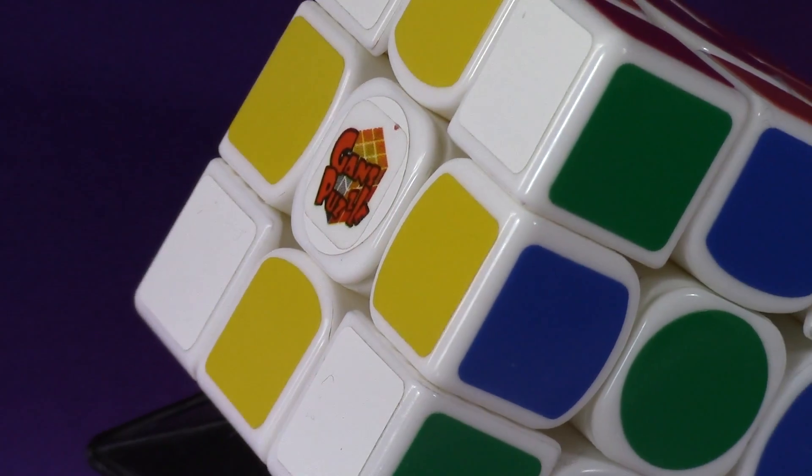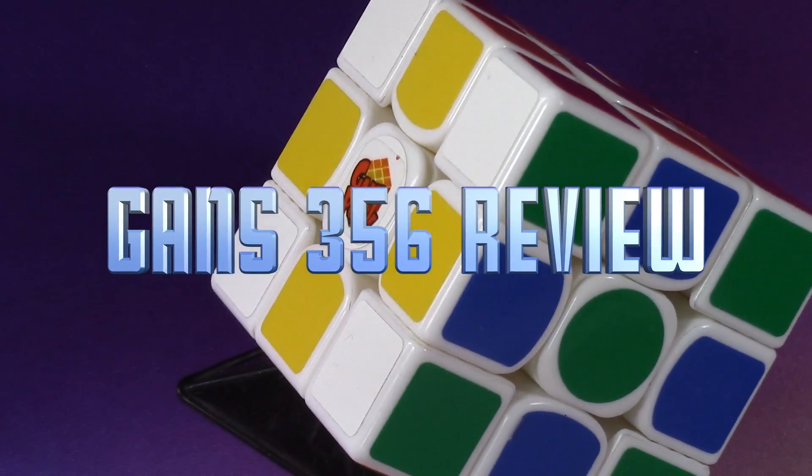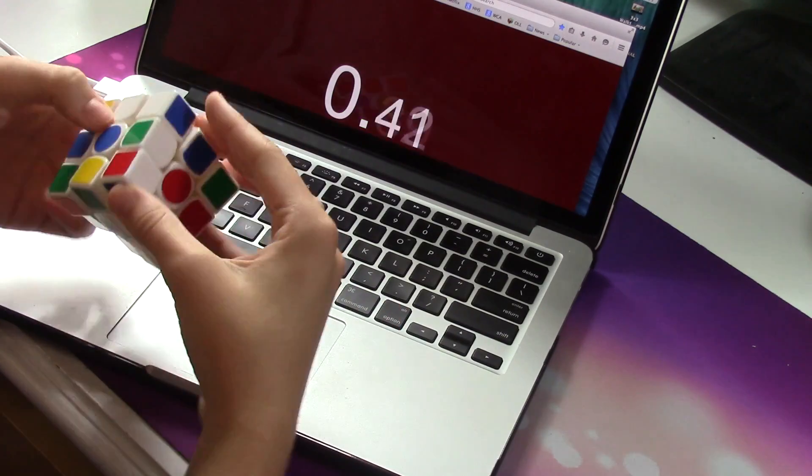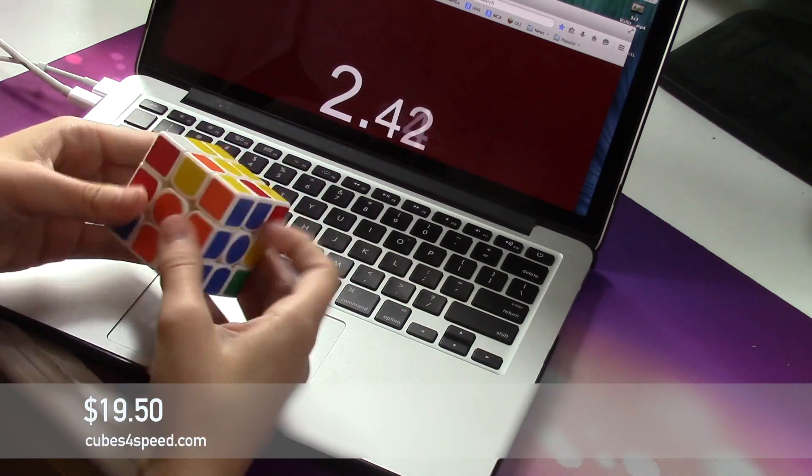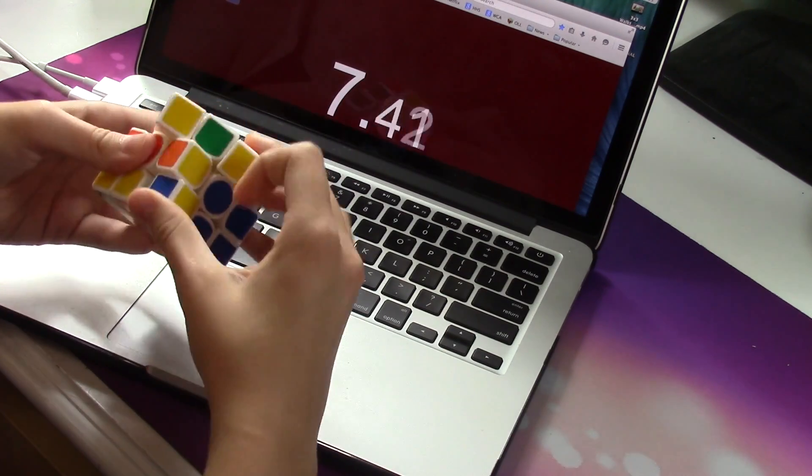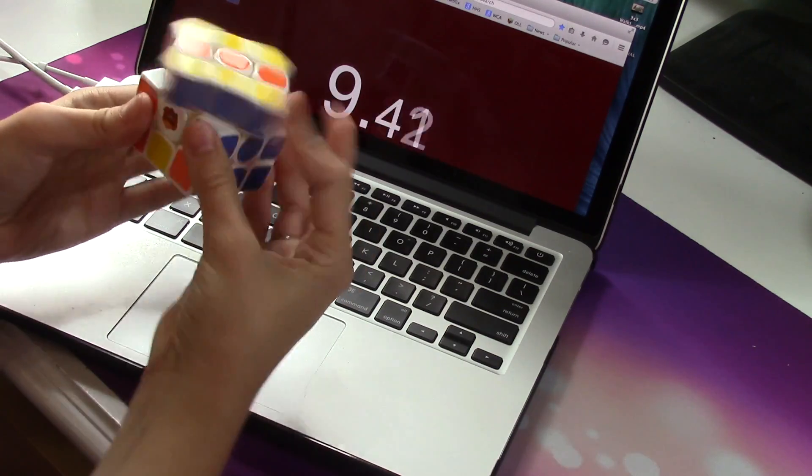Hey, what's up guys? Today I have a long-awaited review of the Gans 356. This cube can be purchased for $19.50 from cubeforspeed.com, which is a lot for a 3x3, but compared to competitors, this is around $3.50 cheaper.